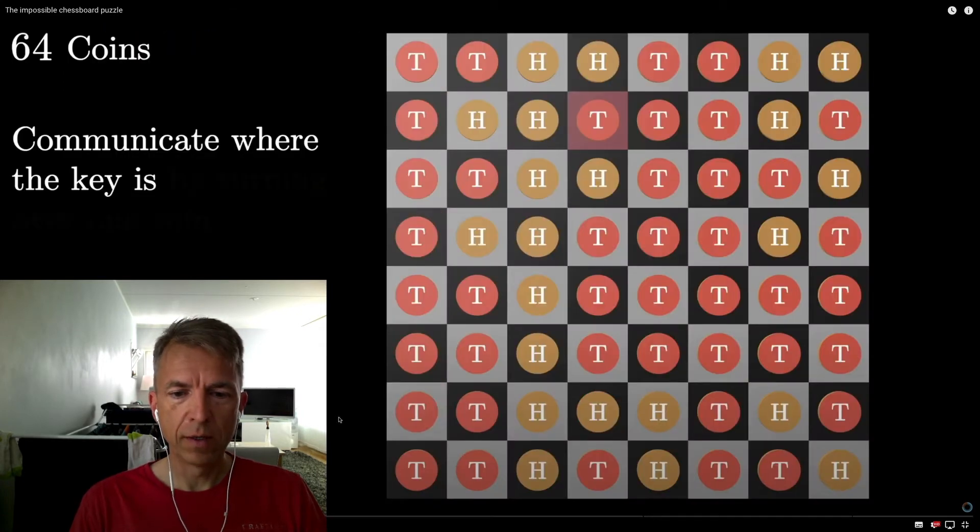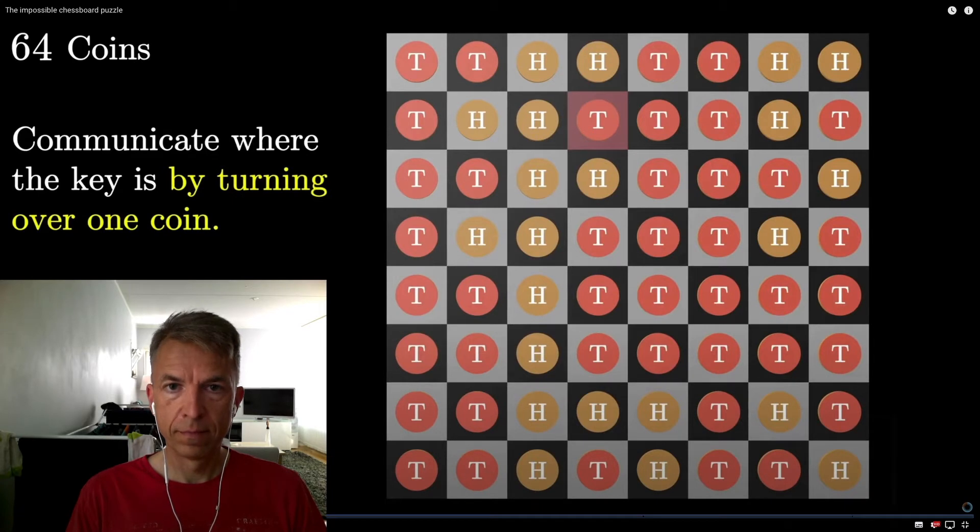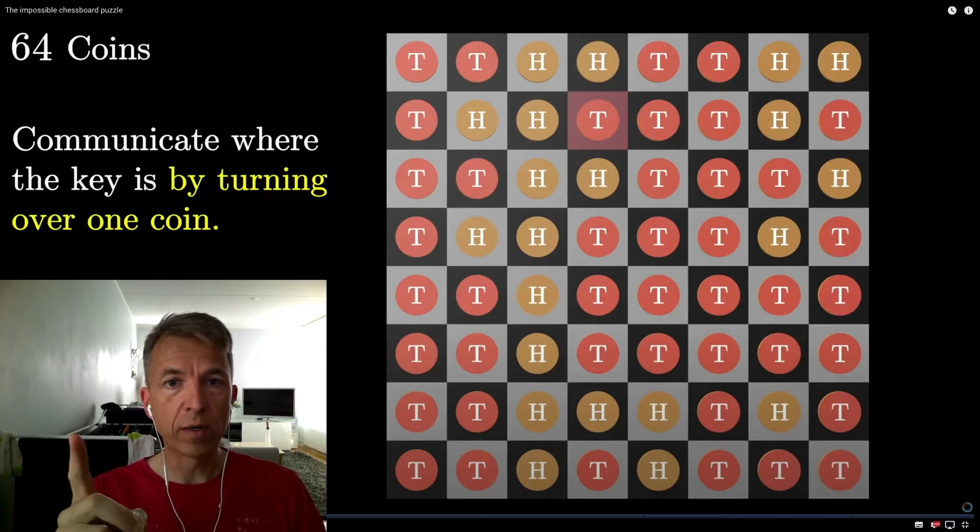Then it occurred to me that, at least when you flip one coin, you change the number of heads and tails on the board. So prisoner number two can count the number of heads and tails. And if the board looked like this before the coin flipping, but the only thing that the warden allows you to do before you leave the room is to turn over one and only one of these coins. You see, now there's one head less and one tail more. Suppose we define a board with an odd number of heads to mean a one and an even number of heads to mean a zero. Then we can convey to prisoner number two at least one bit of information.